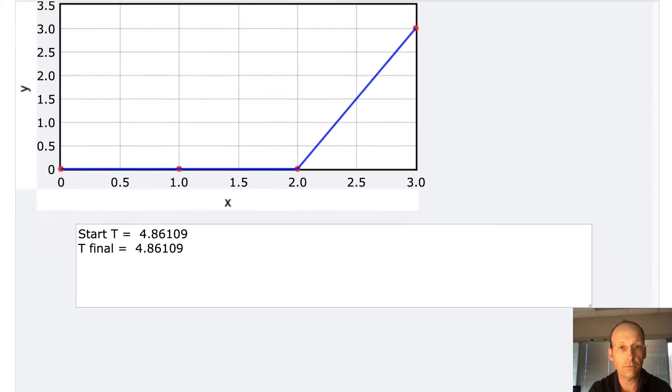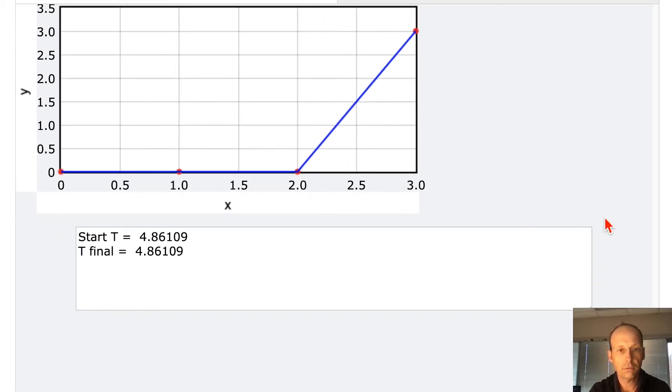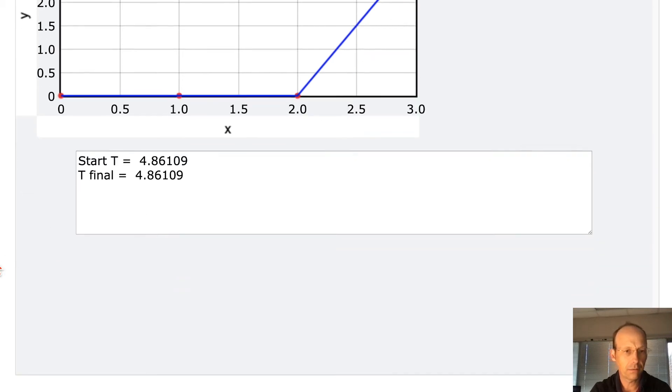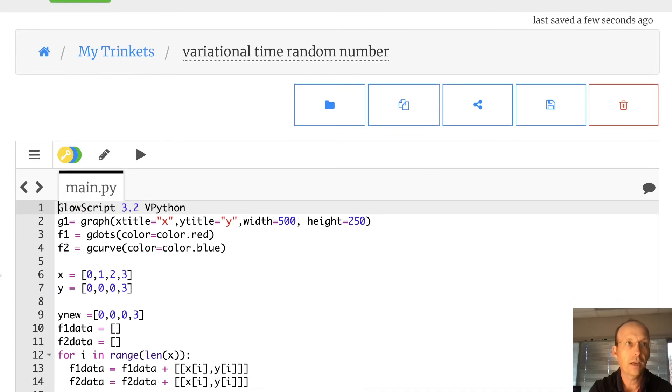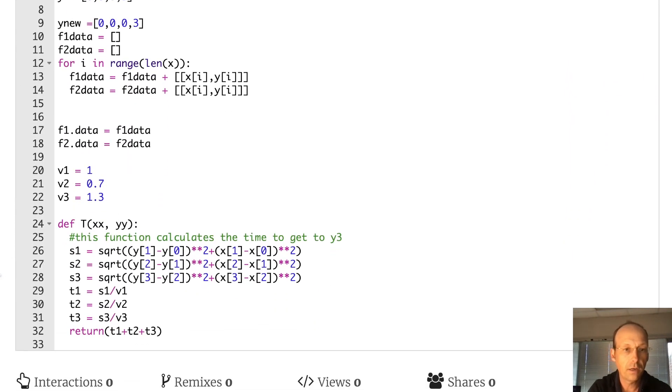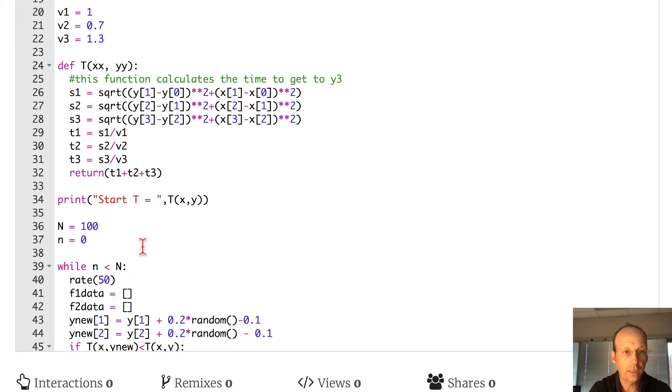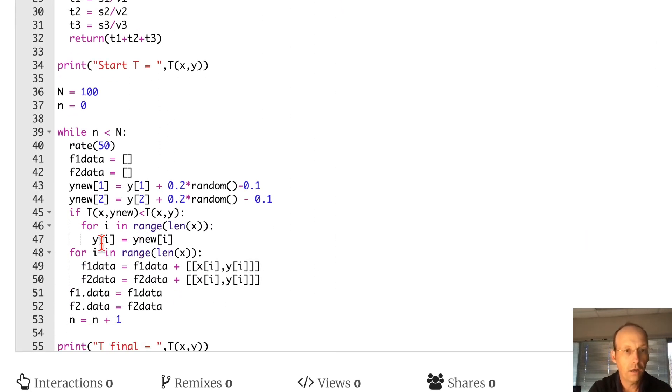Okay. It didn't do anything. Oh no. It didn't plot it though. It didn't change anything. Okay. I made a mistake somewhere. That's fine. It's just a greater opportunity to have some fun here. Okay. So that's my function. That returns it. N equals zero. If T X, Y new is less than T X, Y, then set the new one equal to that. And then plot it.